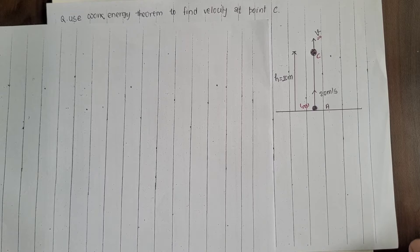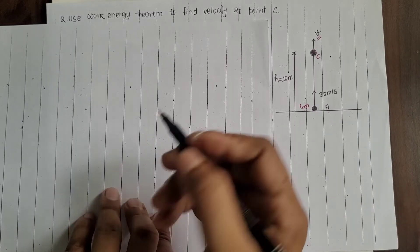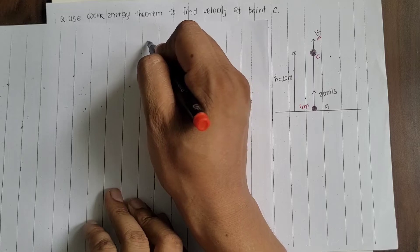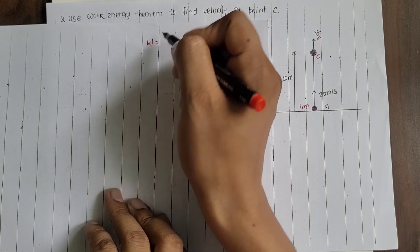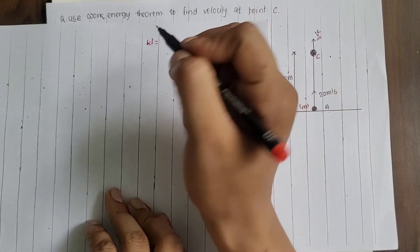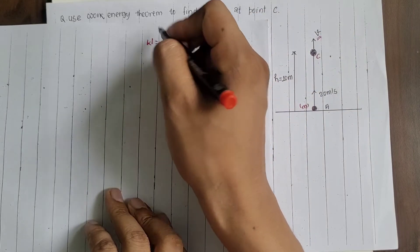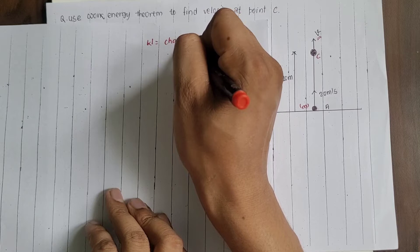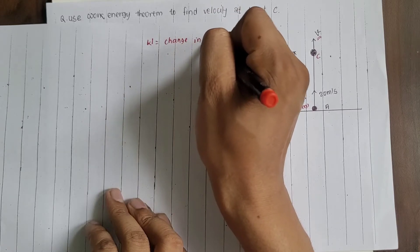What is the Work-Energy Theorem? The Work-Energy Theorem states that if you have a system, the work done on the system is equal to the change in energy of the system. That is, W equals change in energy.